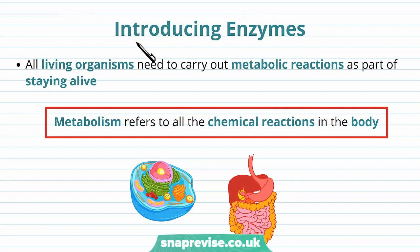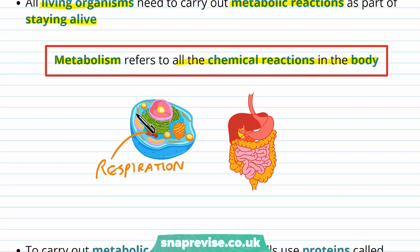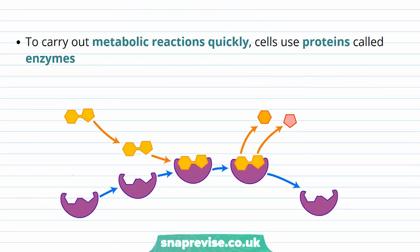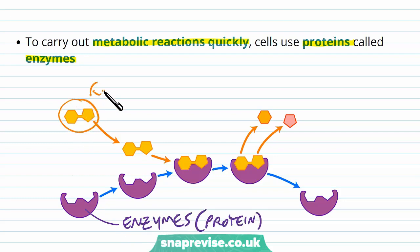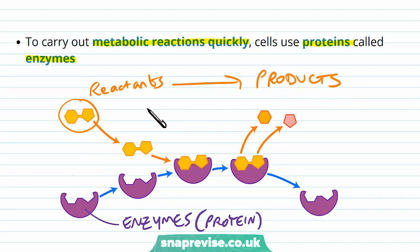Enzymes are important molecules for carrying out all of our reactions. Any living organism has to carry out a range of metabolic reactions — all the chemical reactions that happen in the body — including respiration, digestion, photosynthesis in plants, with lots of different cells carrying out many reactions at once. To carry out these reactions fast enough to survive, we use proteins called enzymes. Enzymes are large proteins folded into a correct shape, and they take reactants and turn them into products faster than they would happen on their own.